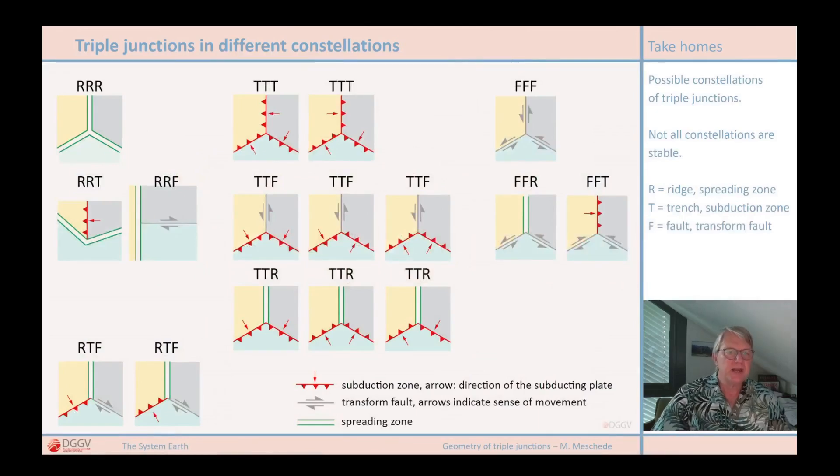Let's look at the different options for triple junctions. We can imagine various constellations of triple junctions, all based on the three possible types of plate boundaries. Ridge, that's what the R stands for. Deep sea trench, that's what the T stands for. Or transform fault, that's what the F stands for.